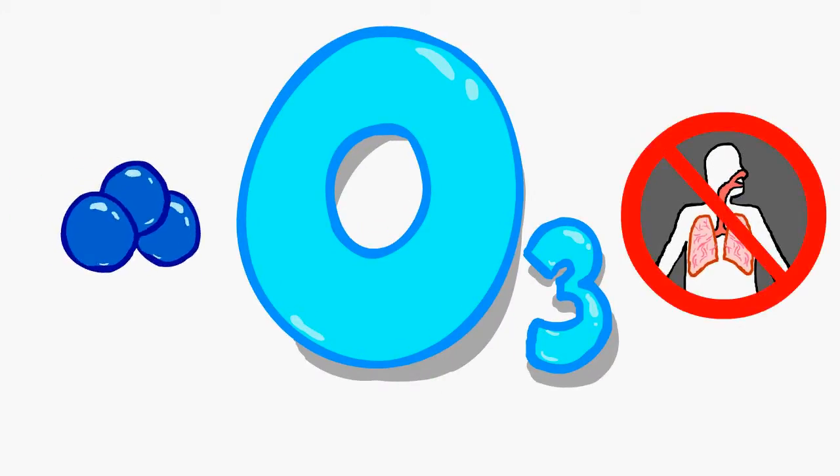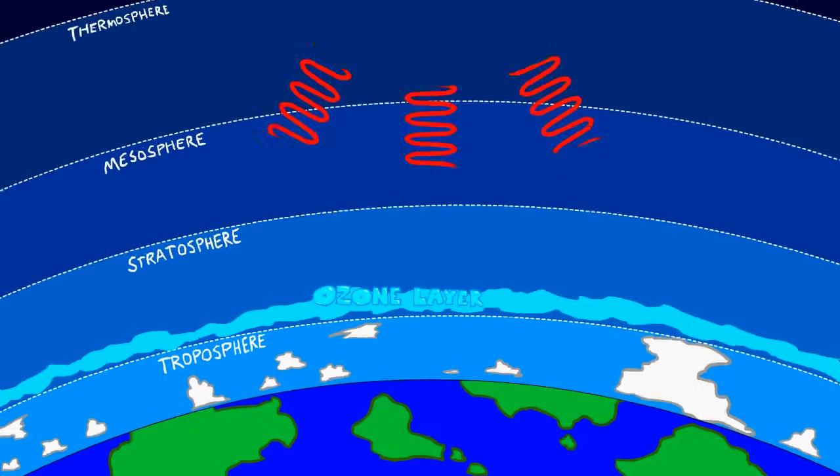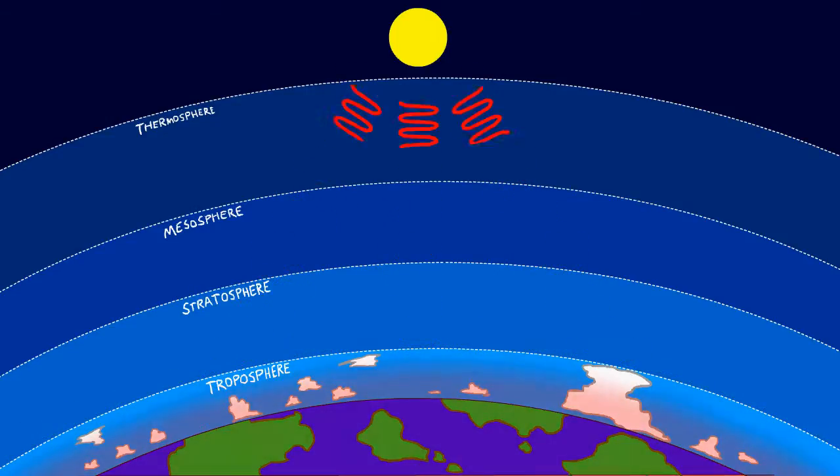O3 is ozone. High up in the stratosphere, it's made naturally and absorbs harmful ultraviolet rays from the sun. Without it, life as we know it wouldn't, couldn't exist. We need the ozone layer in the stratosphere. We want it, we rely on it.